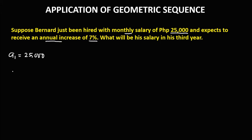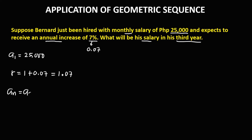Since he will receive an annual increase of 7%, r is equal to 1 for his starting pay — because 25,000 times 1 is 25,000 — plus his annual increase of 7%, which in decimal is 0.07. So r is equal to 1.07. Since we're looking for his salary in his third year, a sub n is equal to a sub 3, which is the unknown.